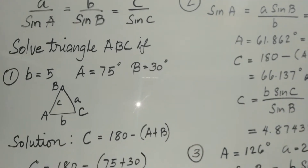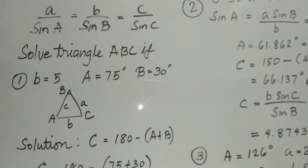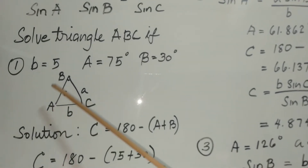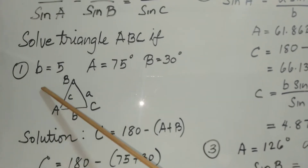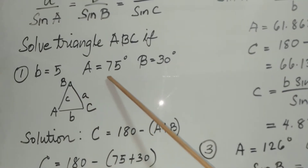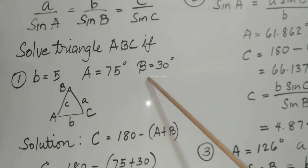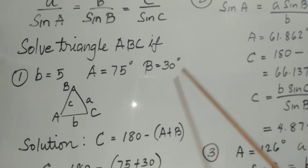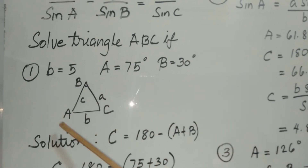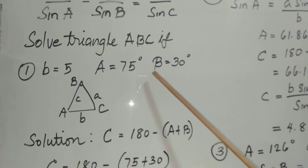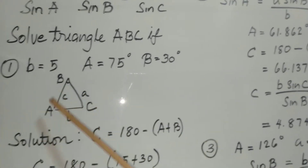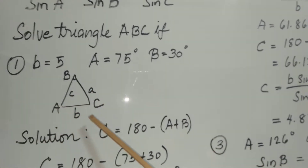We're going to present four problems here. For the first one, we are given side b equal to 5, angle A equal to 75 degrees, and angle B equal to 30 degrees. This is an isosceles triangle.